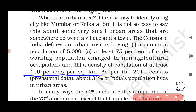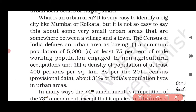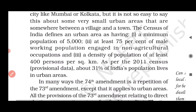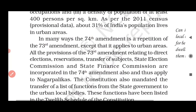There must also be a density of population of at least 400 persons per square kilometer. As per the 2011 Census provisional data, about 31% of India's population lives in urban areas.